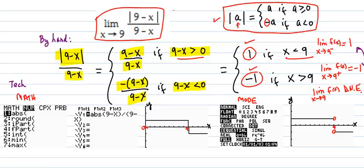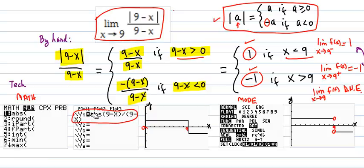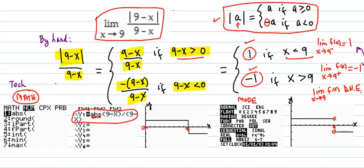In the calculator, you have to put in the function, here, abs 9 minus x divided by 9 minus x. You get the abs, absolute value, from the math menu, scroll over to number, and abs is number 1.